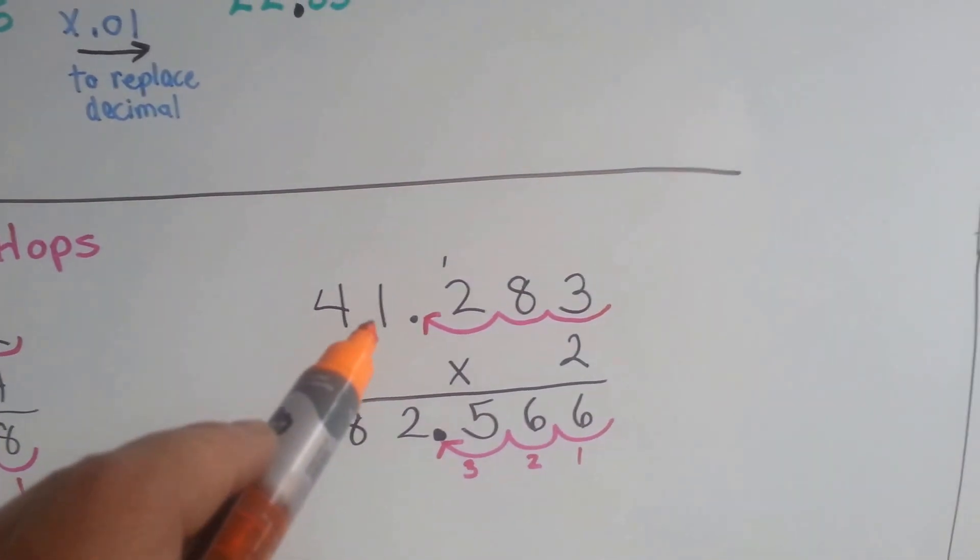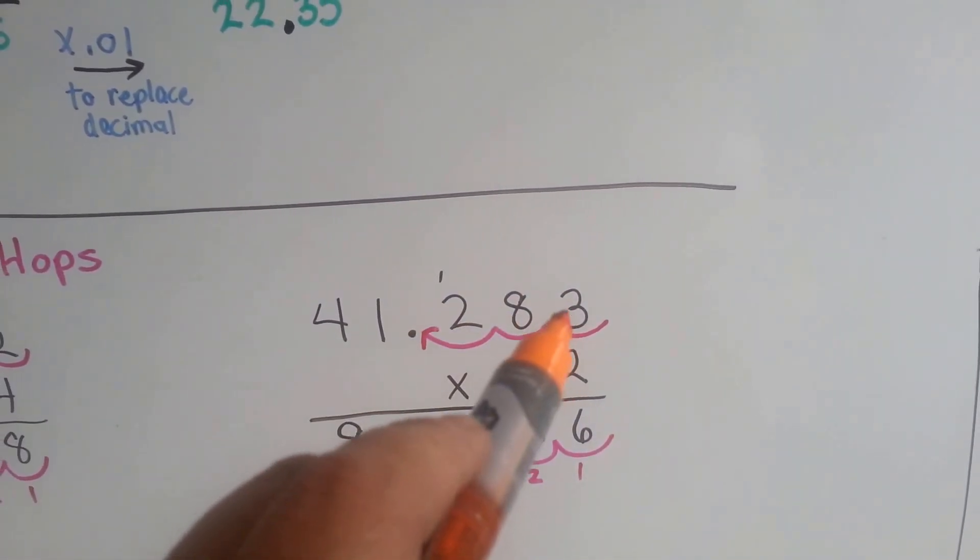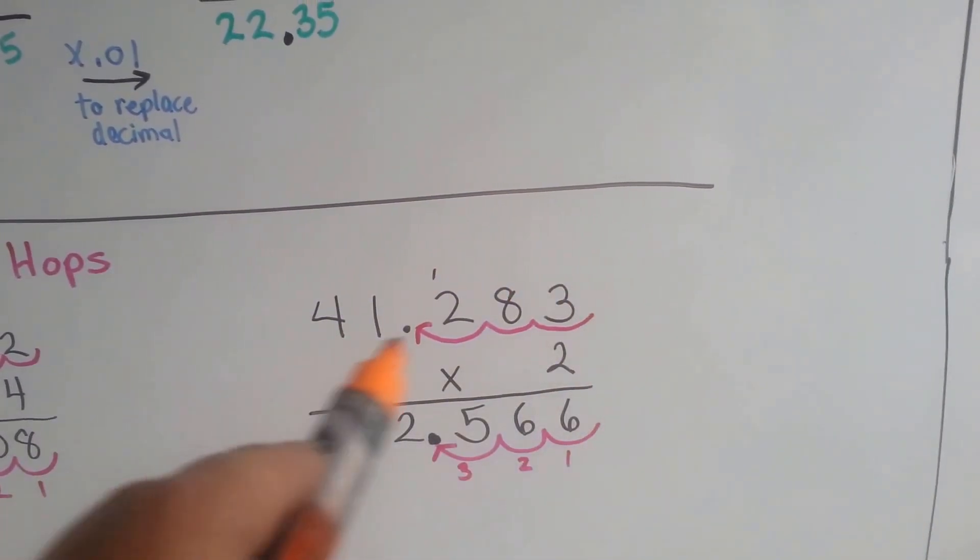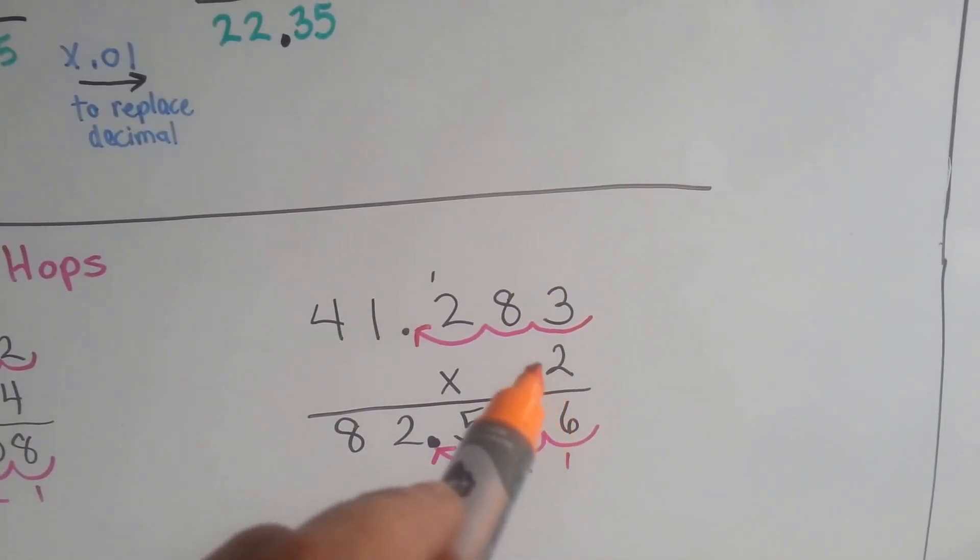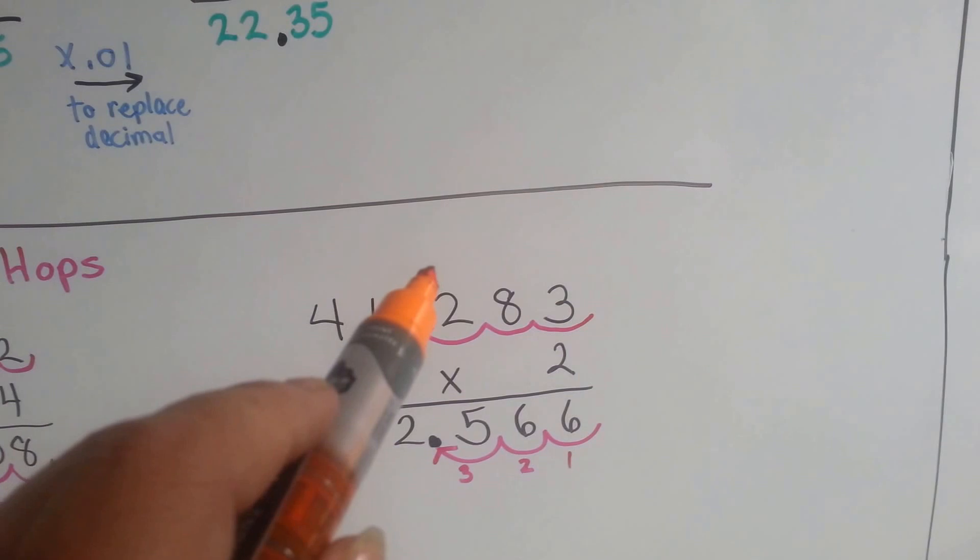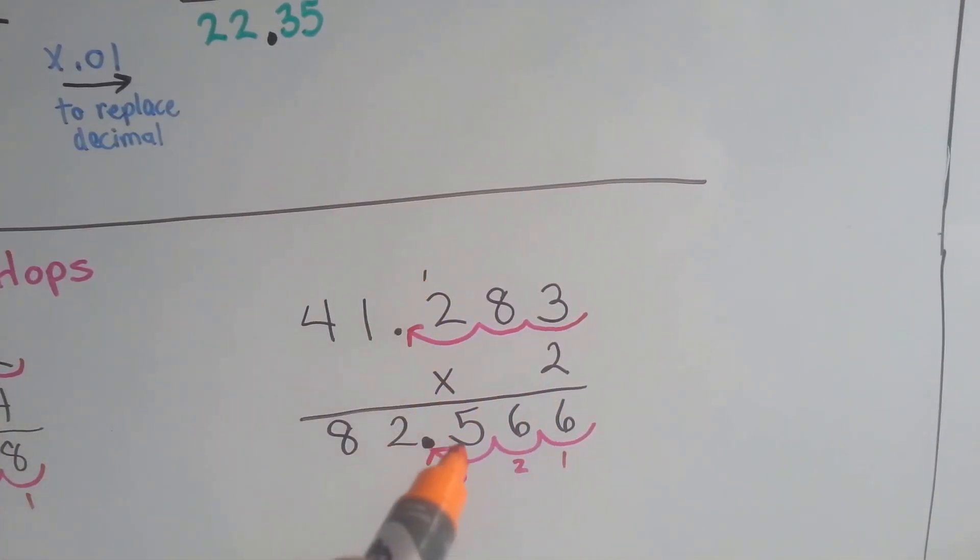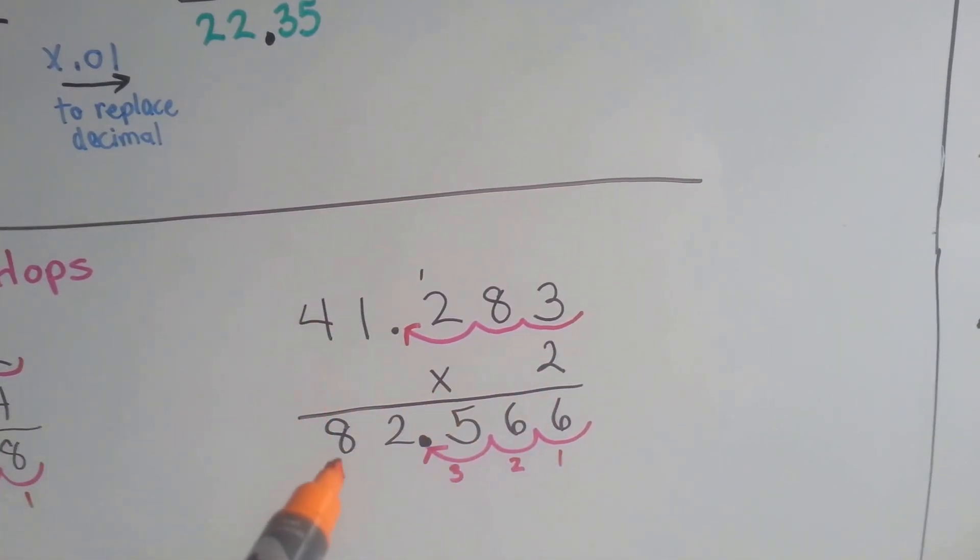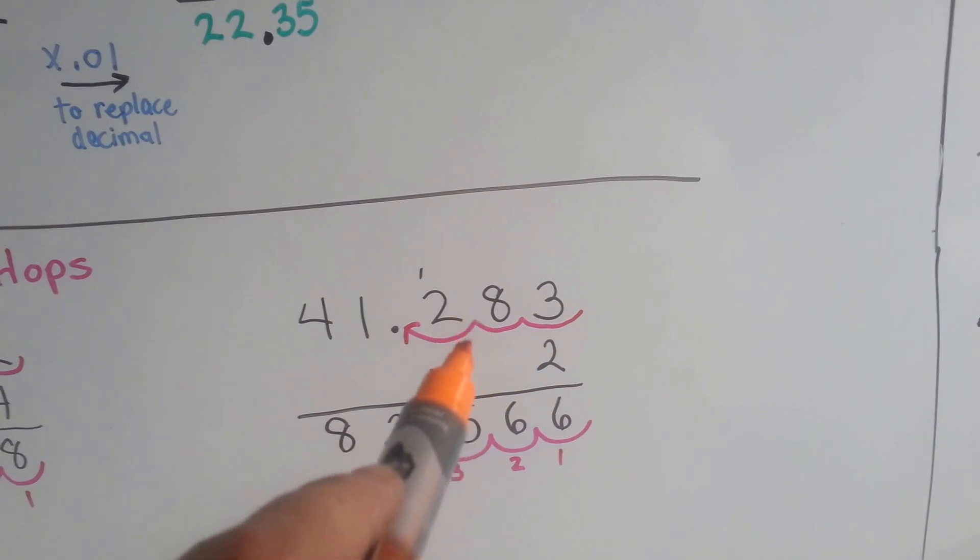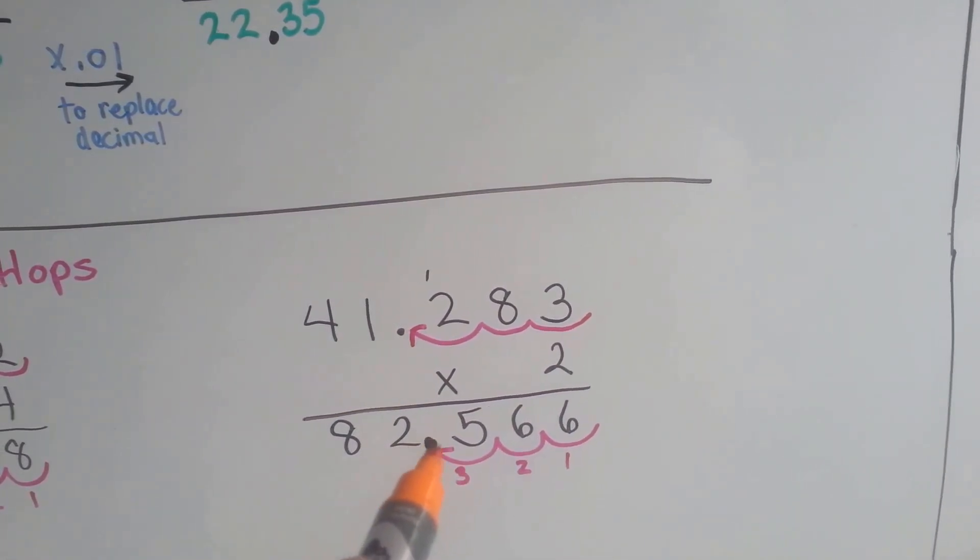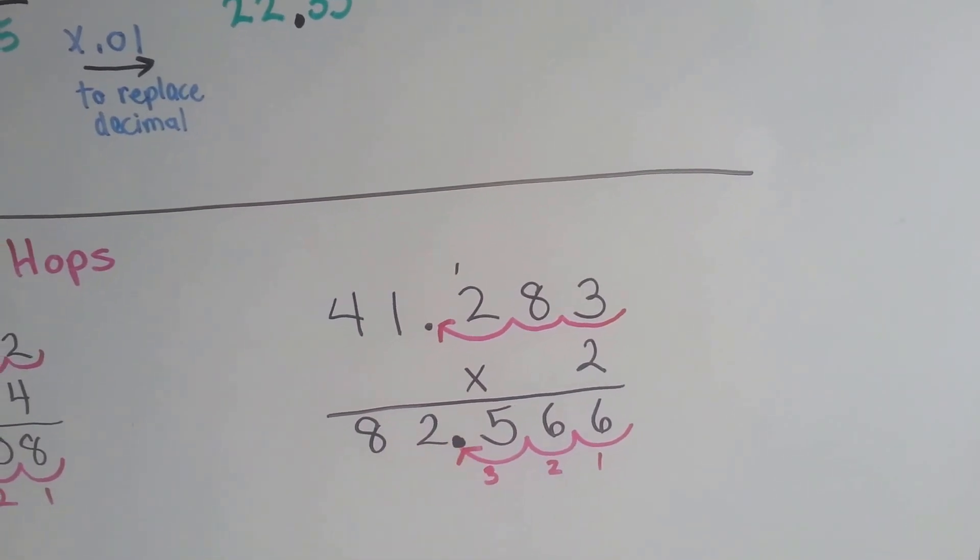Even if we had a big one, if we had 41 and 283 thousandths times 2, just do it like a regular multiplication problem. 2 times 3 is 6, 2 times 8 is 16, carry the 1, put the 6 down. 2 times 2 is 4, plus the 1 is 5, 2 times 1 is 2, and then the 2 times 4 is 8, and count the hops. 1, 2, 3. 1, 2, 3. And then we know the decimal point goes in between the 2 and the 5.